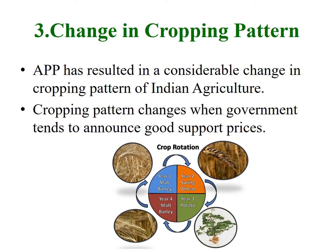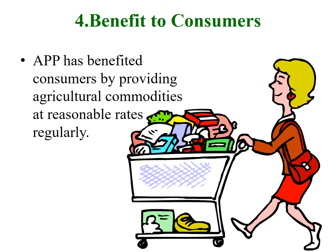Another important effect of agricultural price policy is that it changes the cropping pattern. Agricultural price policy has resulted in a considerable change in the cropping pattern of Indian agriculture. The production of wheat and rice has increased considerably through the adoption of modern techniques and necessary government support. However, the production of pulses and oil seeds could not achieve considerable change in the absence of such price support. Agricultural price policy also benefits consumers by supplying essential agricultural commodities at reasonable prices regularly.